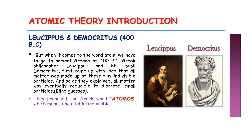When Greek philosophers Leucippus and his pupil Democritus first came up with the idea that all matter was made up of tiny indivisible particles, no one knows how they developed this concept. They just thought that if you cut something in half enough times, eventually you reach a particle that can't be cut anymore. They proposed the Greek word 'atomos,' which means uncuttable, indivisible. Atomic theory as we know it today is the product of hundreds, if not thousands, of different insights.